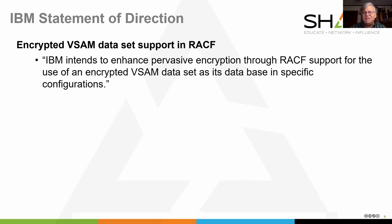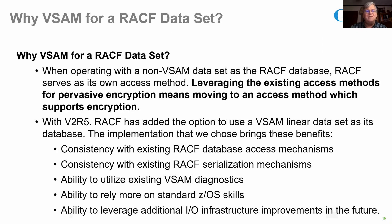About two years ago, IBM issued a statement of direction: IBM intends to enhance pervasive encryption through RACF support for the use of an encrypted VSAM data set as its database in specific configurations. Why did we go this way rather than having RACF call encryption services itself? RACF could have called ICSF directly for key management and encryption/decryption. Early on we did go down that path, exploring what it would take to do that.